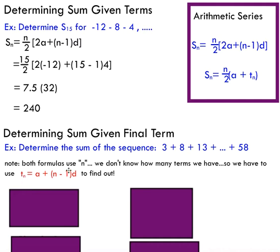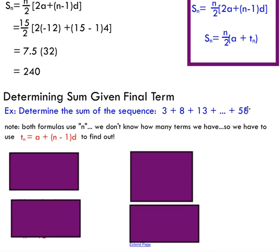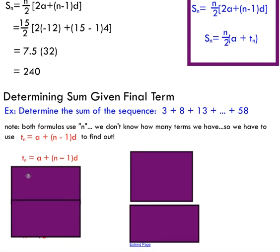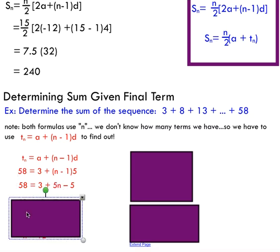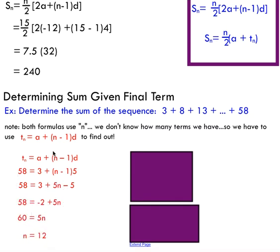We pretty much have to treat this as a sequence and use this formula from our arithmetic sequence study. We're going to use this formula to determine what n is. This is going to tell us how many terms we have in this series, so we're going to pretend that this is a sequence just for a moment. I know the final term is 58, so I'm going to sub that in for tn, my a value of three. I know the common difference is five. I can use algebra here to solve for n, and that's going to tell me the number of terms that I have in my series. So between three and 58, if I add five each time, I'm going to have 12 terms in this series.